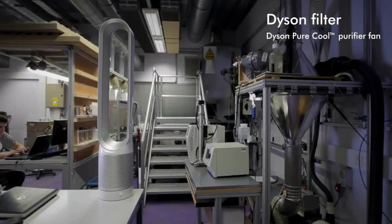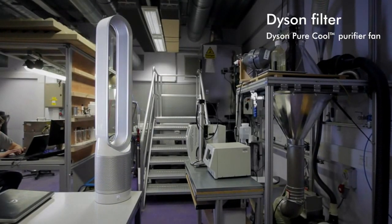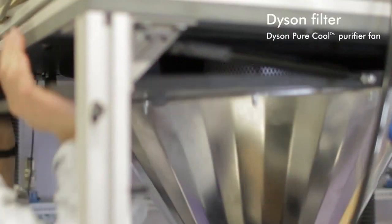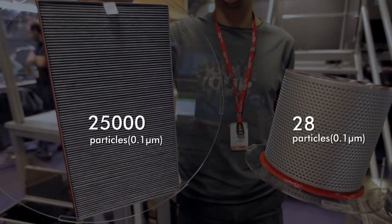This is the filter from the new Dyson machine. When we tested it to the same amount of particles going in, less than 30 got through, compared to over 25,000 through the other filter.